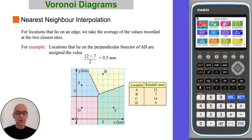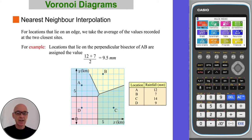For locations that lie on an edge, we take the average of the values recorded at the two closest sites. For example, locations that lie on the perpendicular bisector of AB are assigned the value 9.5 mm, the average of 12 and 7, the values recorded at sites A and B, the adjacent sites.